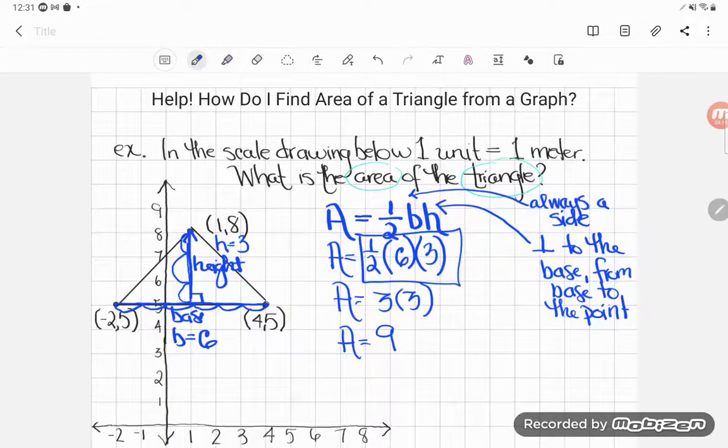And now, of course, the question is nine what? Well, that's where this comes in. It says in the scale drawing below, one unit is equal to one meter. That means the height was three meters, the base was six meters. So my area is going to be nine square meters.